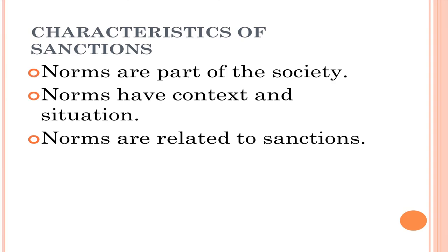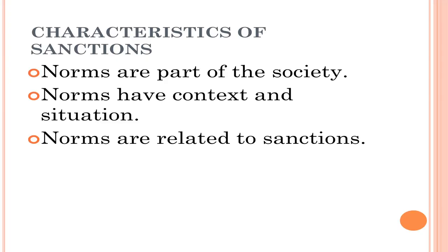Now let us discuss the characteristics of norms. We have discussed the meaning of norms, personal and social norms, and sanctions which are positive, negative, formal, and informal in nature. The first characteristic is that norms are a very natural part of society — they exist in any society you can think of, though norms may be different. For example, norms regarding how you interact with teachers or elders may differ, but norms do exist in each and every society.